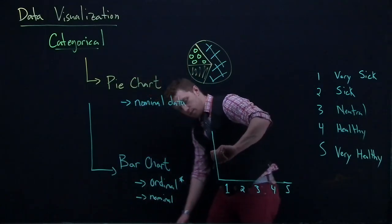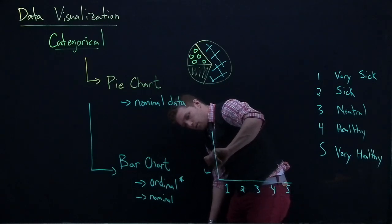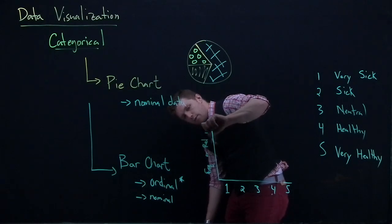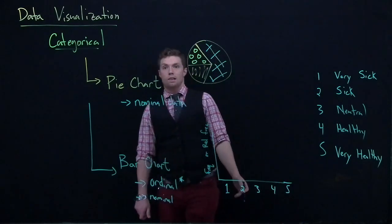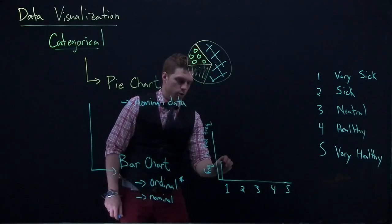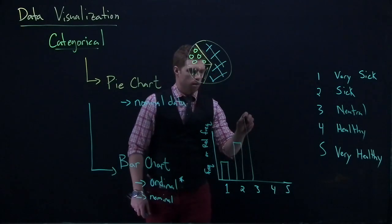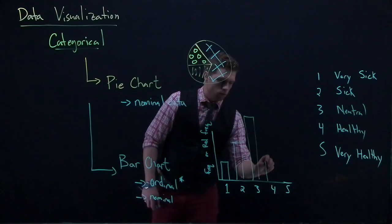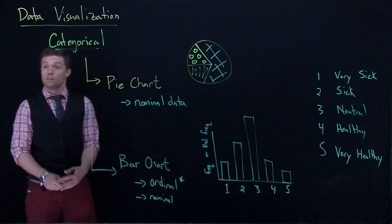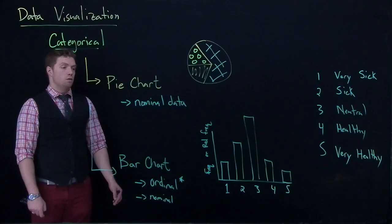But then we could also do either frequency or relative frequency. And these look a lot like a histogram. One way though that often, not always, but often you'll be able to tell them apart, is that the bars don't touch. I mean, that's not like a hard and fast rule. But oftentimes with a histogram, you'll see the bars touching one another. And with a bar chart, they don't touch one another.